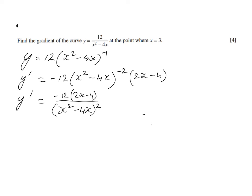But they ask not what is the derivative. They ask what is the gradient where x is 3. So now we're going to evaluate the gradient function for when x is 3. So minus 12 times 2 times 3 minus 4 over 3 squared minus 4 times 3 squared. So make sure you don't make any silly mistakes. Now do not try to go too quick.